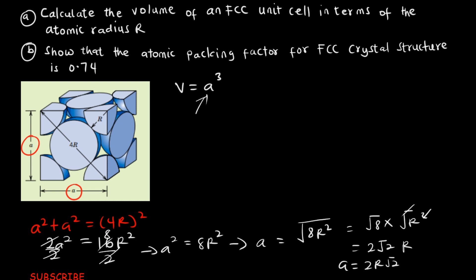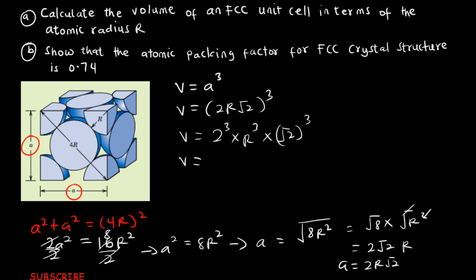Substituting A = 2R√2 into the volume formula V = A³, we get V = (2R√2)³ = 2³ × R³ × (√2)³ = 8 × R³ × 2√2 = 16√2 R³. So the volume of the FCC unit cell in terms of atomic radius R is 16√2 R³.